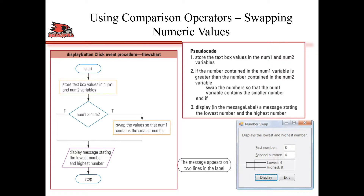In this example, we want to write a program where we input two numbers - a first number and second number - and then display on the top the lowest out of the two numbers, and on the bottom the highest one.